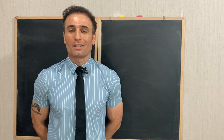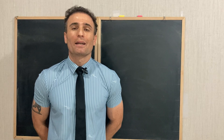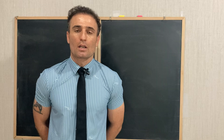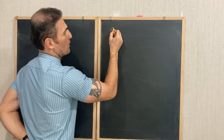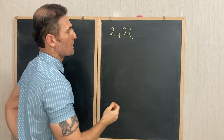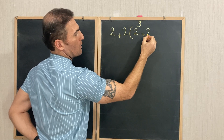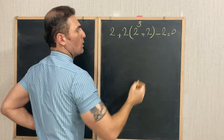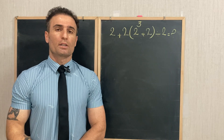Welcome to math with teacher MJ. In this lesson we are going to solve a basic SAT math problem that many got wrong. The question says: find the value of 2 plus 2(2³ + 2) divided by 2. The question looks easy, but why do many get it wrong?